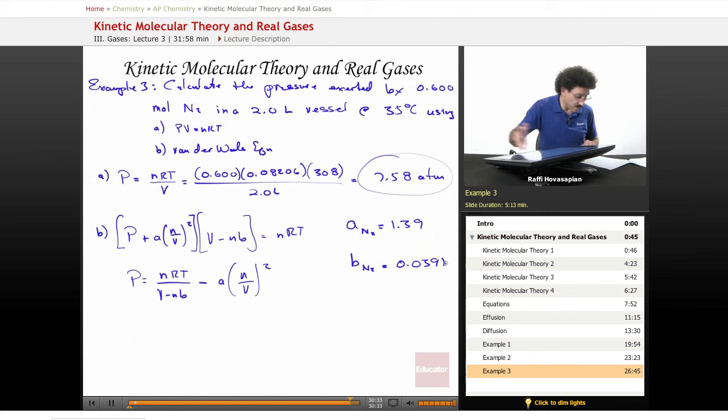When we put all of these values in here, we end up with 7.67 for this first term, and we end up with 0.1251 for this second term, which gives us a total pressure of 7.56 atmospheres.